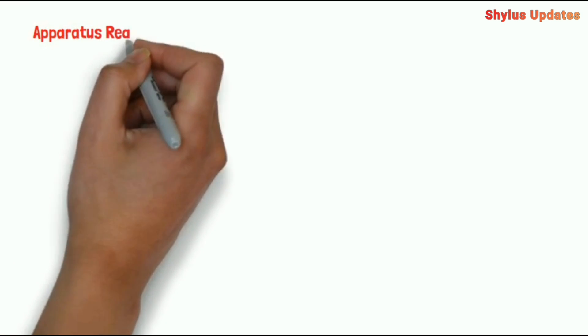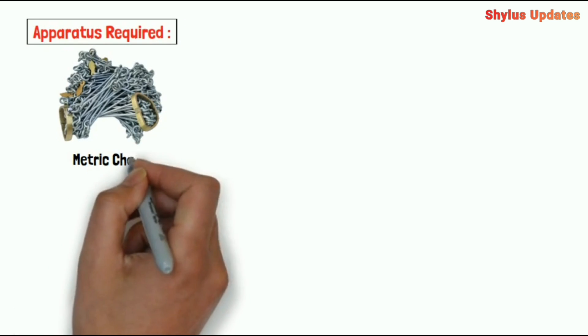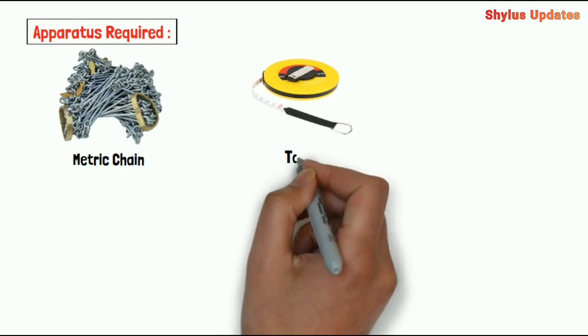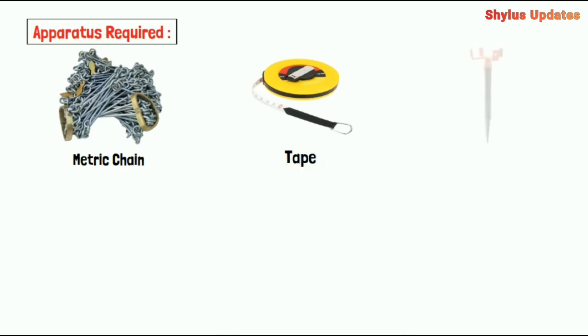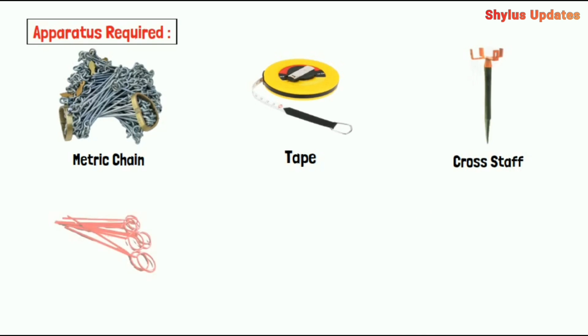Now let's see what are all the apparatus required: metric chain, tape, cross staff, arrows, ranging rod, and field book.